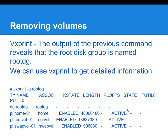VxPrint is a command that you use to gain more information on the volumes that are in a particular disc group. VxPrint on its own will list the information on all the disc groups on your system. If you have many disc groups on your system, you may want to use VxPrint minus G, which will list the information for a specific disc group. For the purpose of this slide, we've had to cut down the information that VxPrint provides simply because it wouldn't fit all on one page.